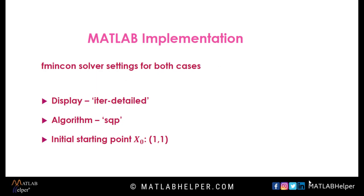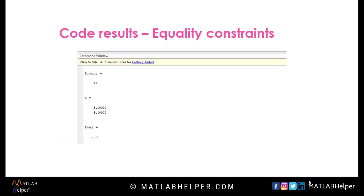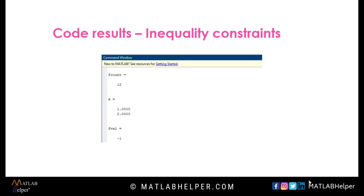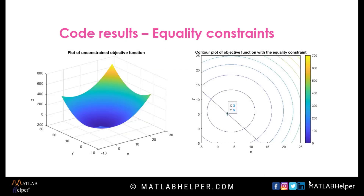The results of running the code are displayed in the command line and graphically as shown here. The results include details such as optimal points x1, x2, and the objective function value at the minimum point. It also includes a display of the iteration details with the number of function evaluations. These are the graphs generated for the equality constraints: the unconstrained objective function, contour plot of the objective function with the equality constraints, and the graphical solution to the optimization problem.